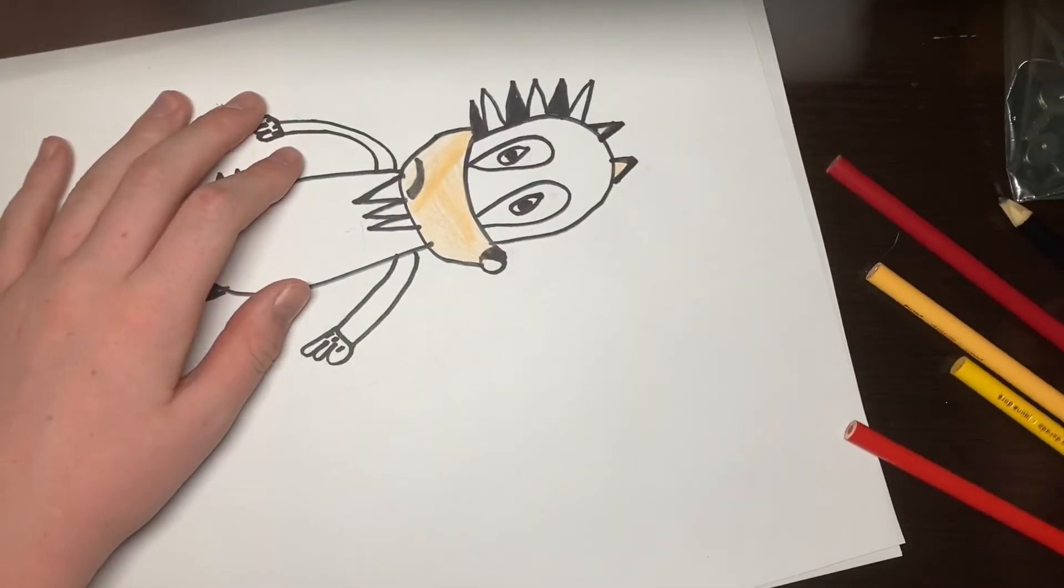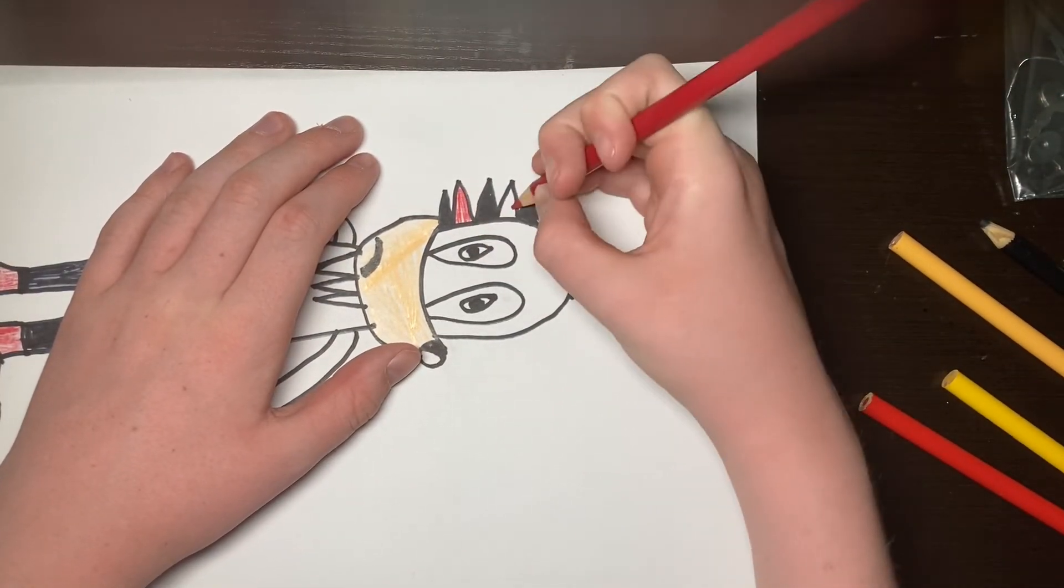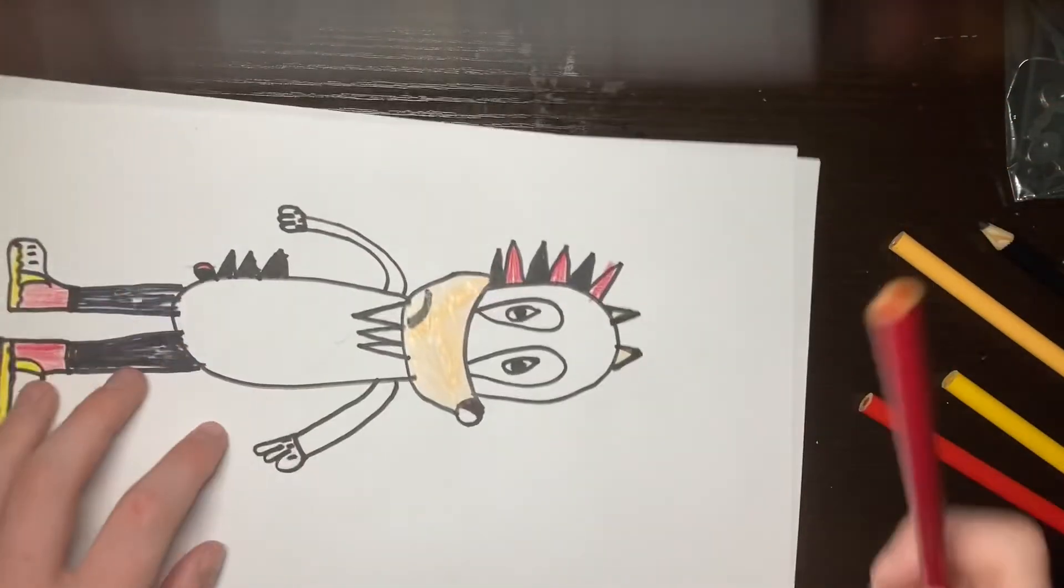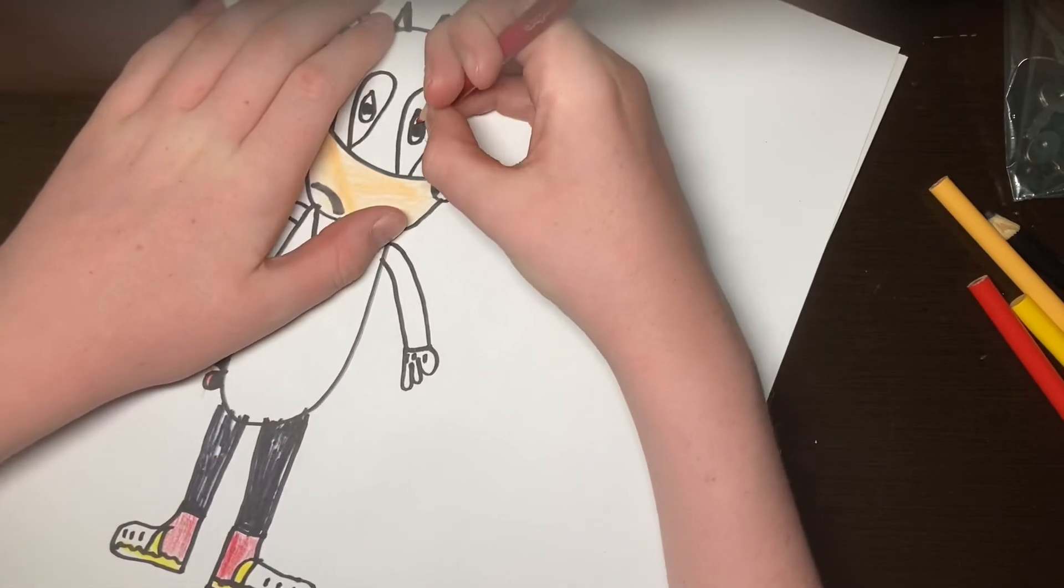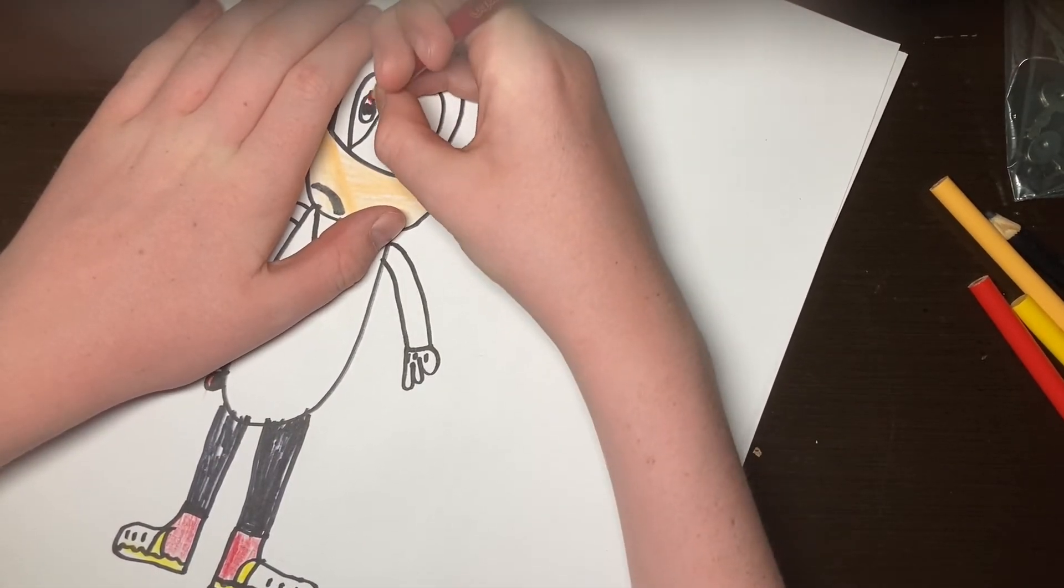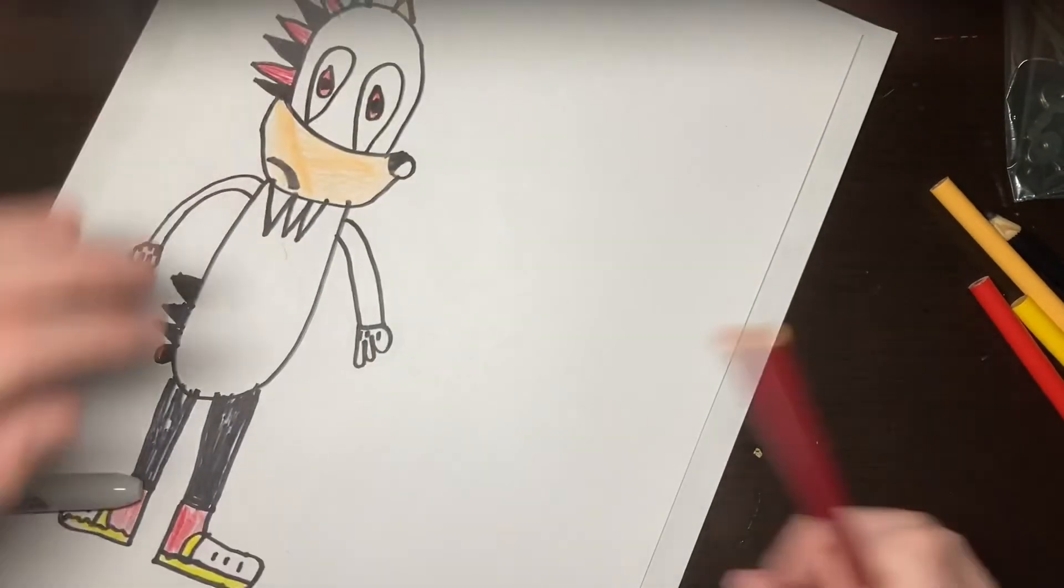Color this in red. One of these in red, other one red. Other one red. And color in his eyes red. Like this. Like that.